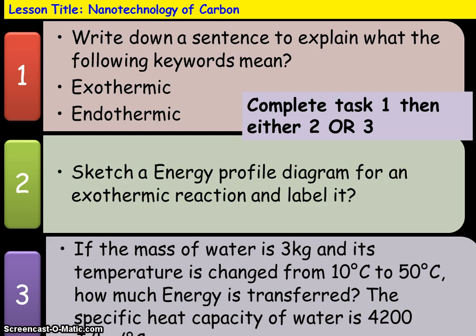In your previous lessons you will have learnt about energy. As a quick review, there are a couple of key terms you should remember. First is exothermic — exo means out and thermic means heat. So an exothermic reaction is one where heat is given out to the surroundings. This is because you get more energy released by making the chemical bonds in the reaction than is required to break them. So you have a negative delta H and an exothermic reaction.